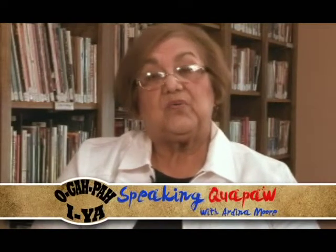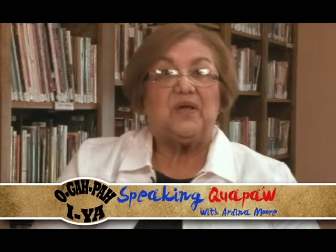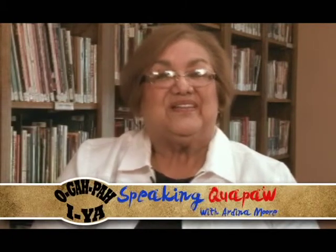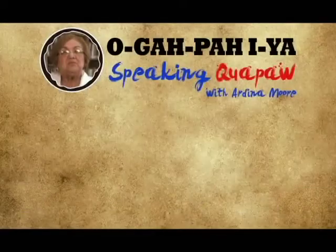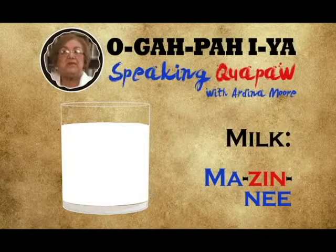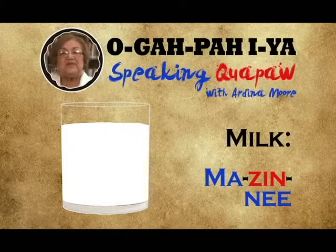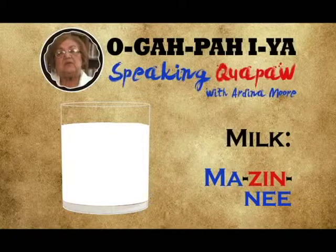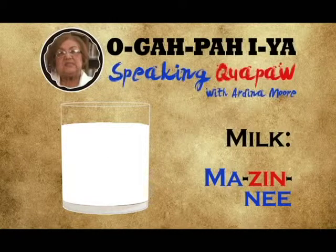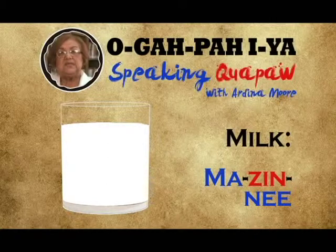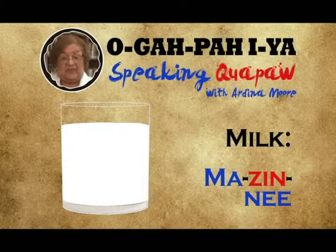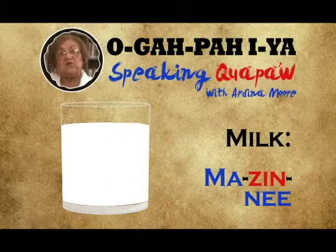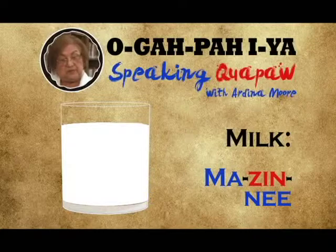The next word is another very important one, because when you were a baby you had to drink a lot of it — and that is milk. The word for milk is 'mazinni.' That word starts with the 'ma' sound and then the middle syllable 'zee': 'mazinni,' meaning milk. You're going to put that word with another word later on, so remember it and practice it well.